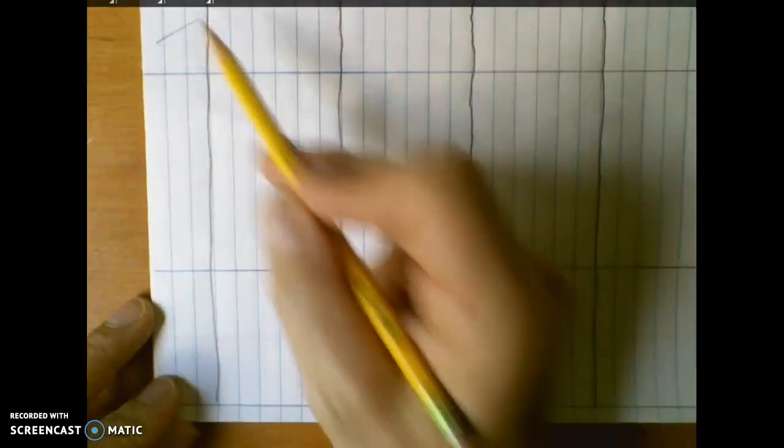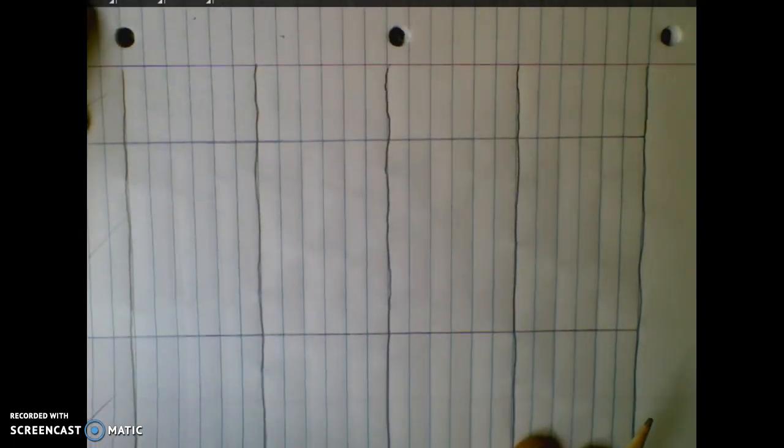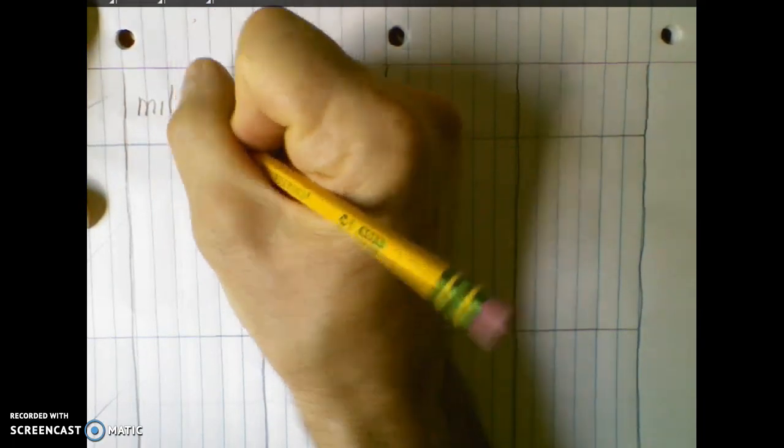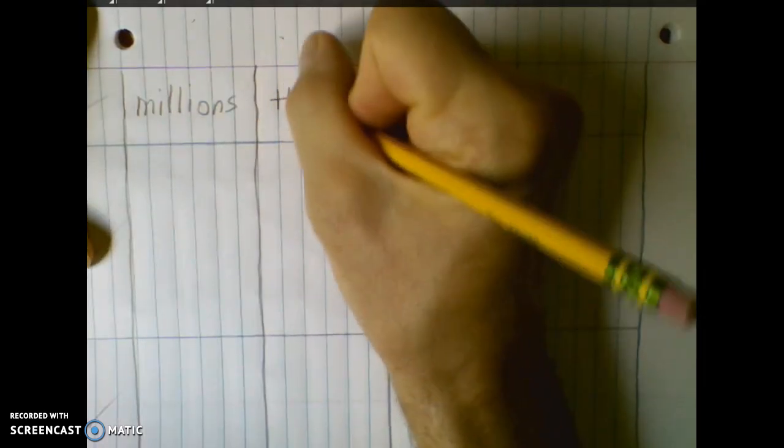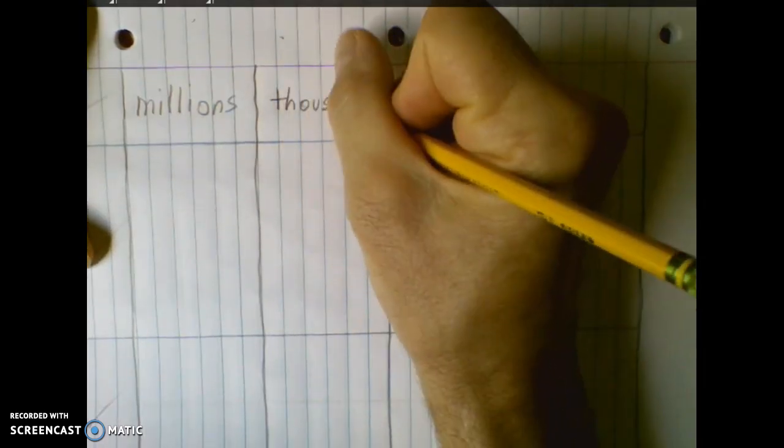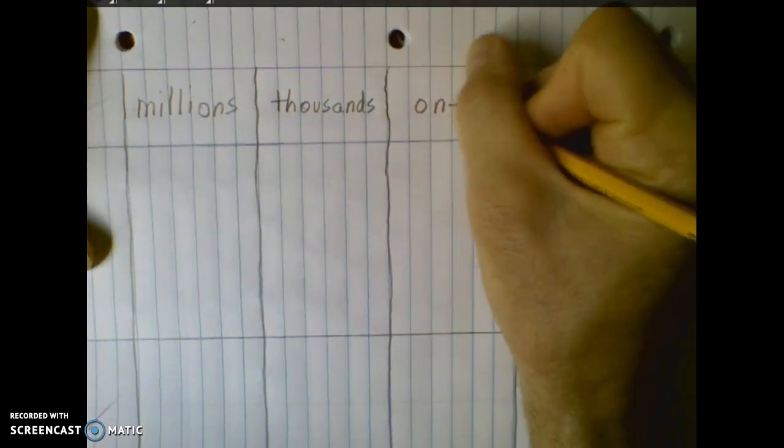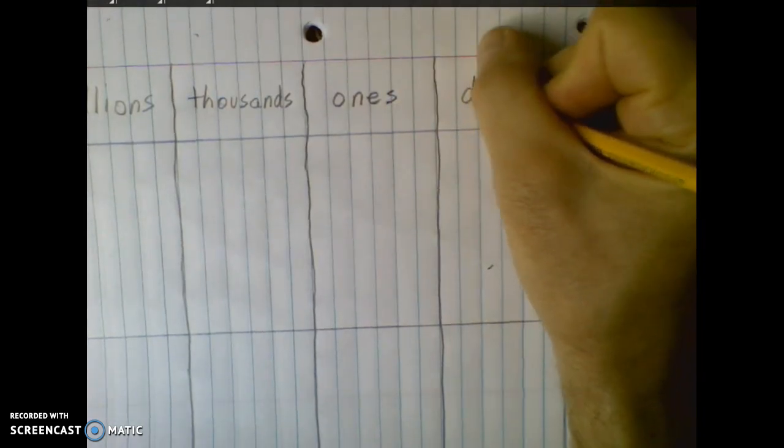We won't be using this area today but we will be needing these four columns. Each of these columns represents a period in the place value system. This first one will be the largest one that we use. This is the millions period. The thousands period follows it. The ones period, very familiar to us all. And the decimals.